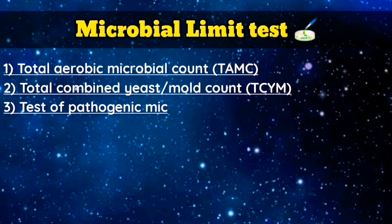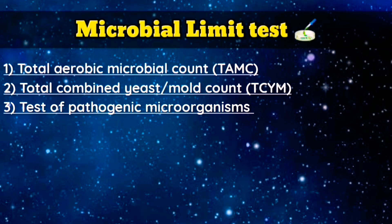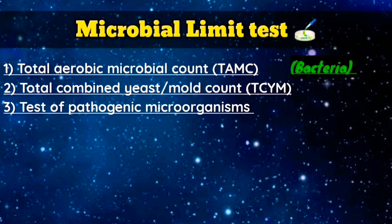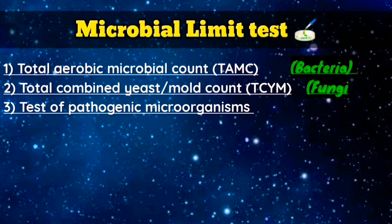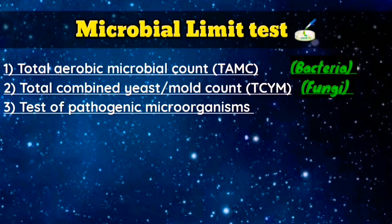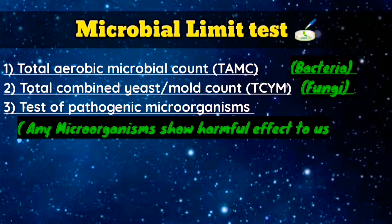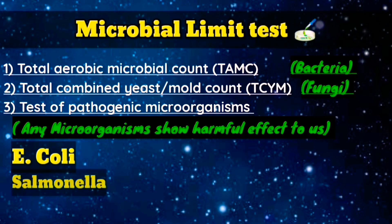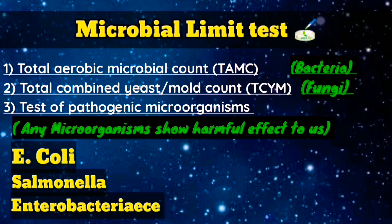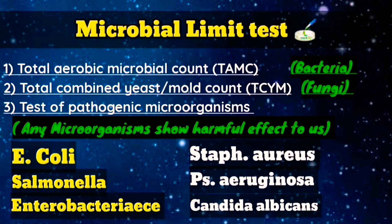It also includes a test for pathogenic bacteria. Total aerobic microbial count is majorly used to detect and investigate bacteria, while total combined yeast and mold count is used to detect yeast and fungi. The test for pathogenic bacteria determines microorganisms that shouldn't be found in pharmaceutical or food industries, such as E. coli, Salmonella, Enterobacteriaceae, Staphylococcus aureus, Pseudomonas aeruginosa, Candida albicans, or any type of microorganism that can cause disease.